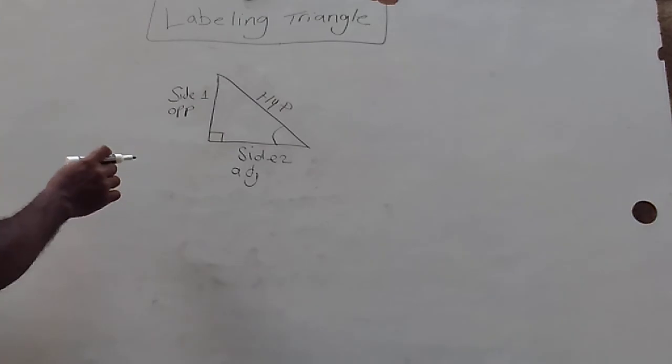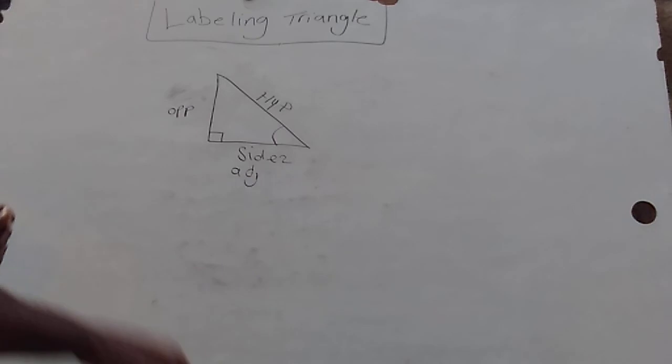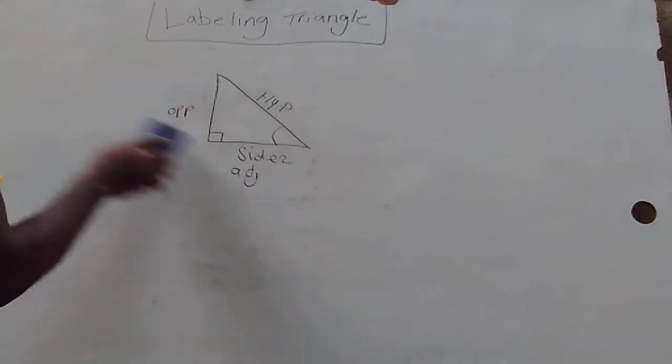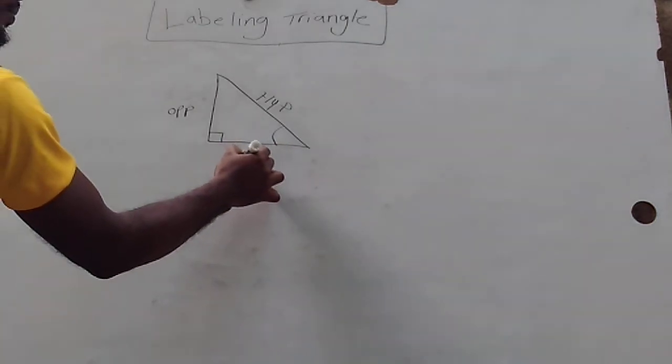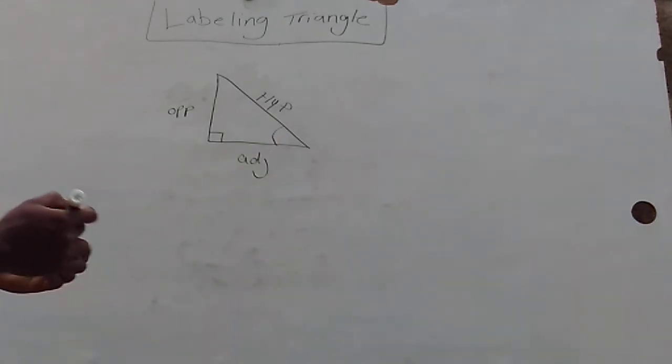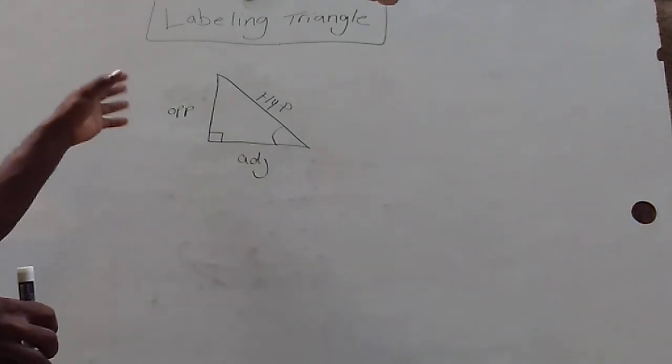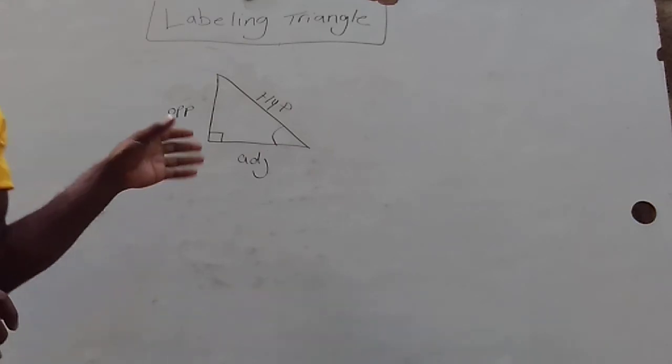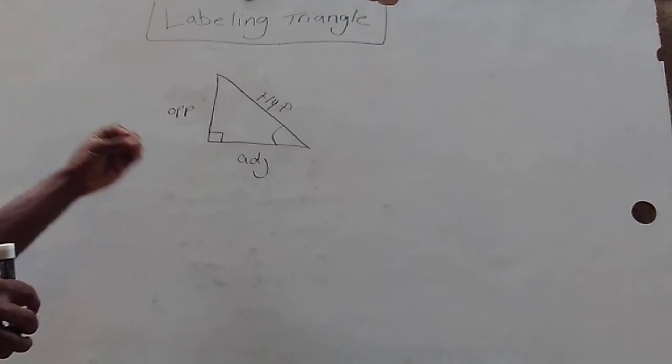So you might see the triangle labeled as hypotenuse, opposite, and adjacent. We'll go into this when we are doing trigonometry or Pythagoras theorem.